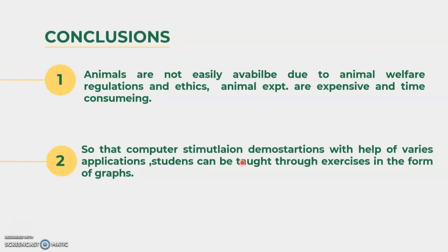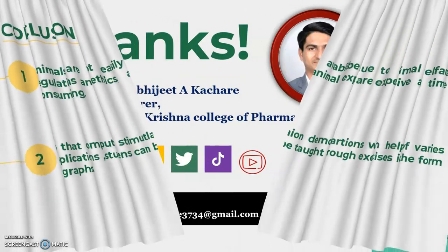In conclusion for experiment number one — Introduction to Experimental Pharmacology — animals are costly, time-consuming, and expensive. Compared with animal welfare regulations and ethics, animals are not easily available. Therefore, this year we will discuss and find out drug effects with the help of computer simulation and demonstration. Students can complete exercises with the help of applications and graphs.